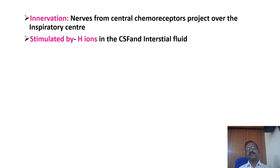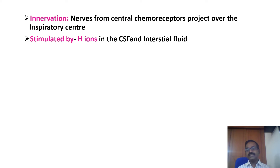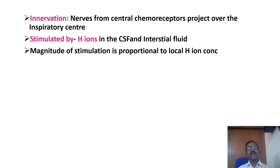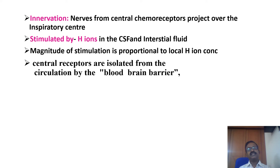Nerves from the central chemoreceptor project over the inspiratory center present in the medulla. The central chemoreceptors are mainly responsible for sensing the partial pressure of carbon dioxide. They are stimulated by hydrogen ions in the CSF and interstitial fluid. The magnitude of stimulation is proportional to local hydrogen ion concentration, which is directly proportional to the partial pressure of carbon dioxide. The central receptors are separated from the circulation by the blood-brain barrier.